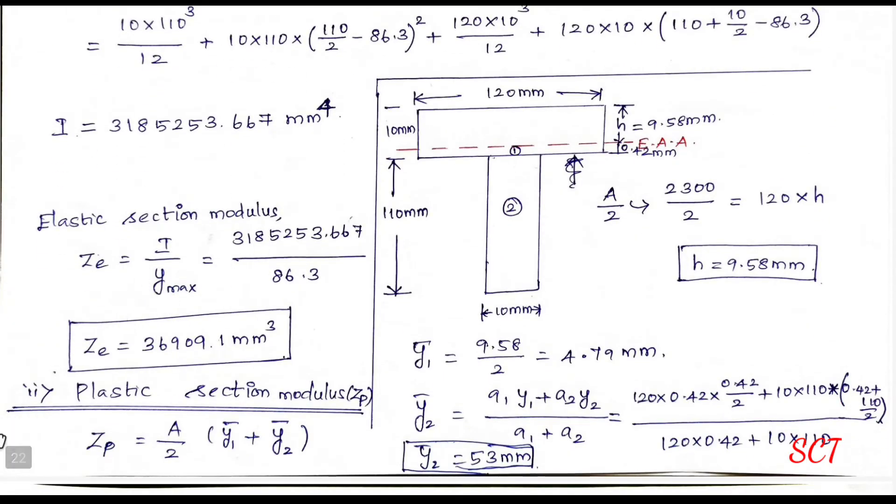Now let's take this elastic section. Elastic section Z is equal to I by ymax. I value substitute, ymax already solved, 36909.1 mm cubed.